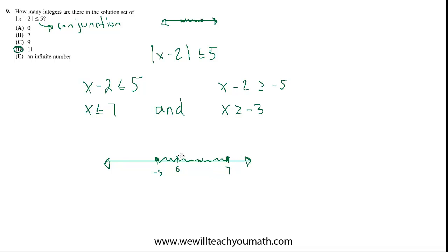And again, just finally, had it been the other way around, had it been a disjunction where it was greater than or equal to, it would be or. So this interval between the two numbers wouldn't be included. Instead it would be everything that's less than negative 3 and everything that's greater than 7. And then the answer would be E, right? It would be an infinite number because if you're going all the way to negative infinity and all the way to infinity, there's going to be an infinite number of integers in that set.